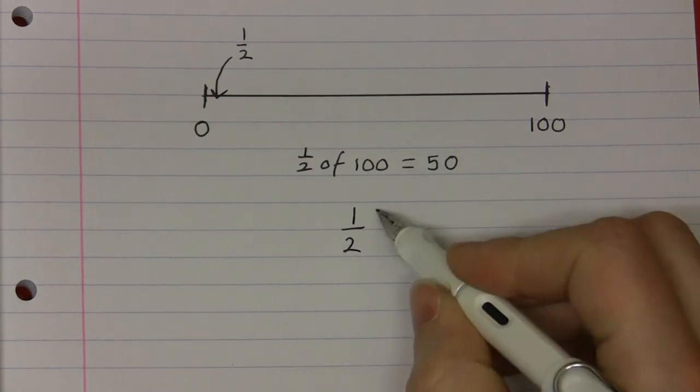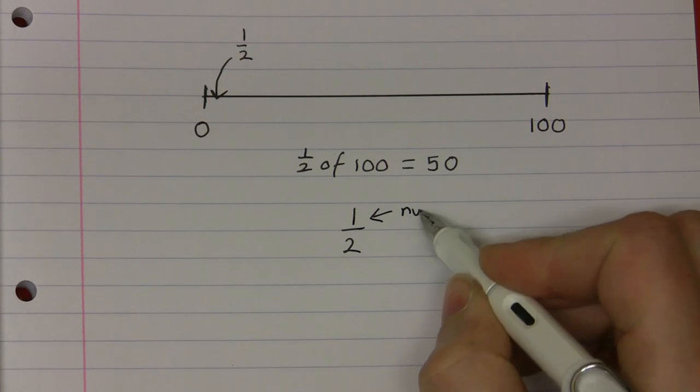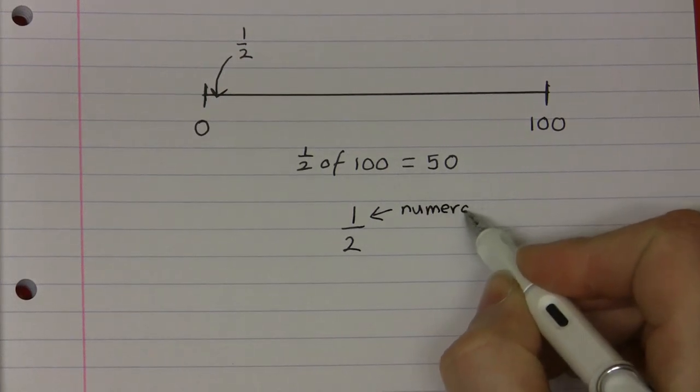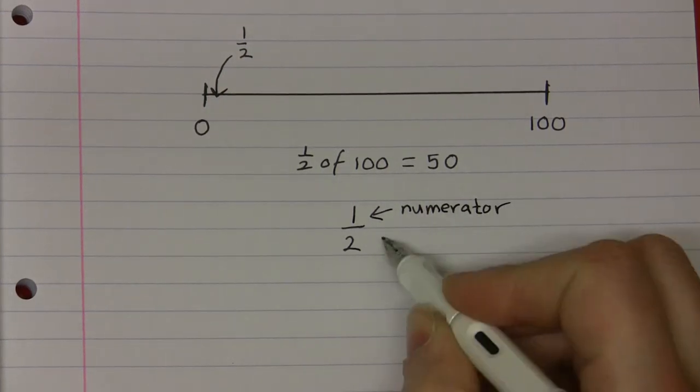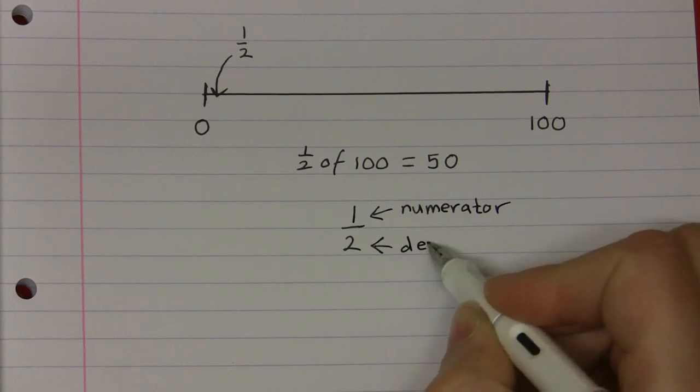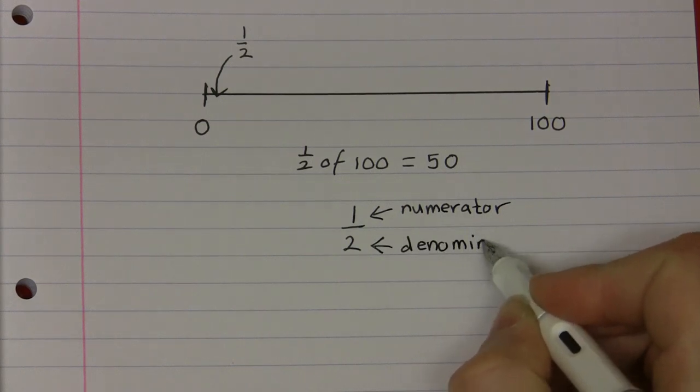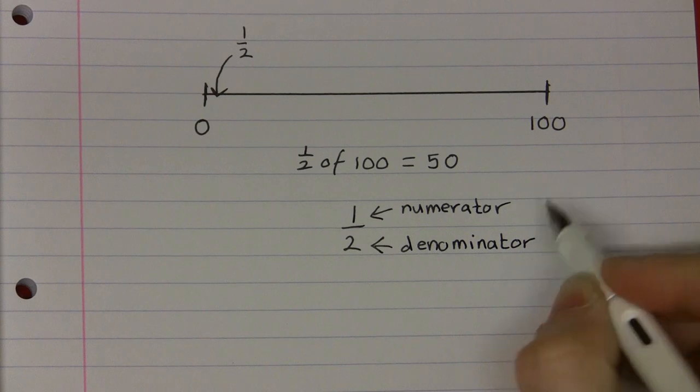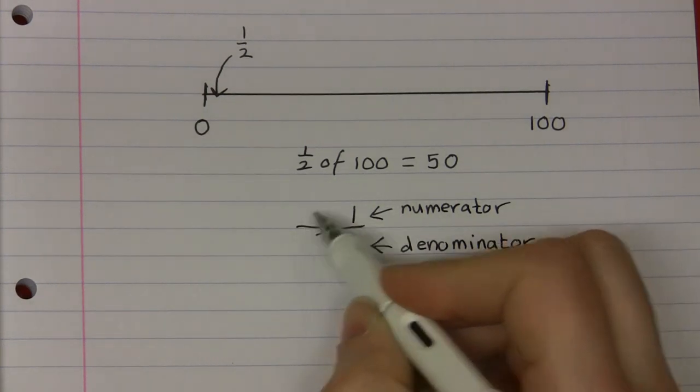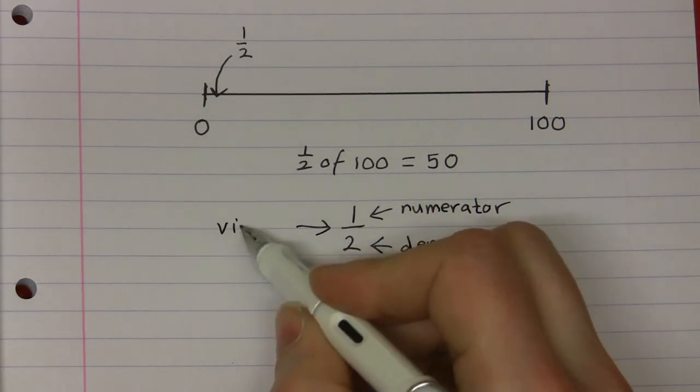The parts of a fraction have mathematical names. The top of the fraction is called the numerator. The bottom of the fraction is called the denominator. And the fraction line itself has a name. This is known as the vinculum.